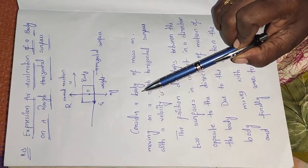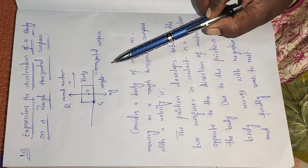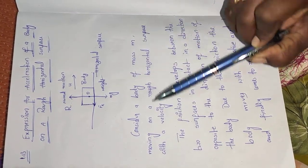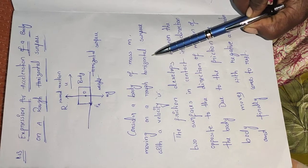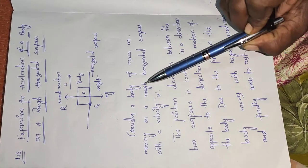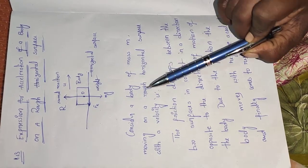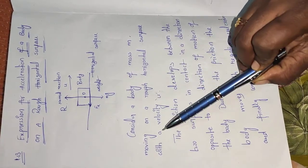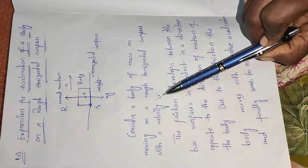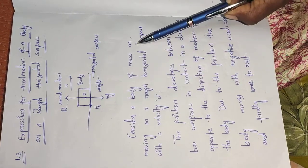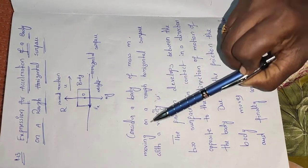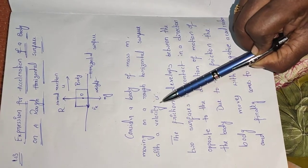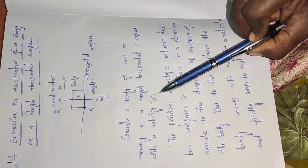Consider one body of mass M moving on a rough horizontal surface. It is not stationary, it is not rolling — it is moving. So, mass M is moving on a rough horizontal surface with a velocity U.